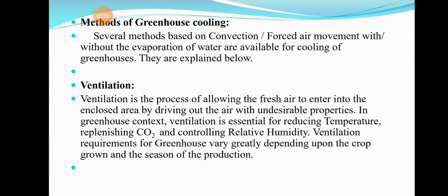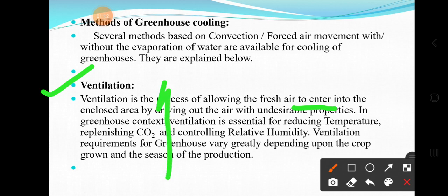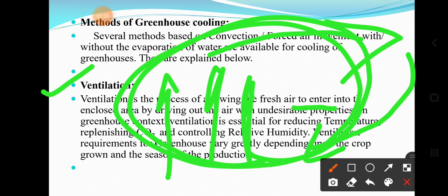Ventilation means allowing fresh air to circulate. Ventilation is the process of allowing fresh air to enter into an enclosed area by driving out air with undesirable properties. Hot air rises up, goes to the top, and is removed from the top ventilation. From the bottom, there is entry of fresh air, and this continuous circulation is called ventilation.